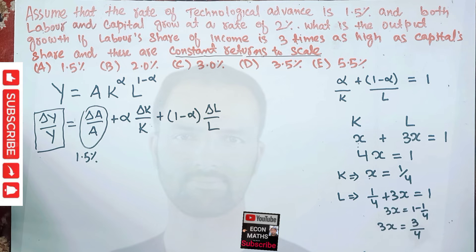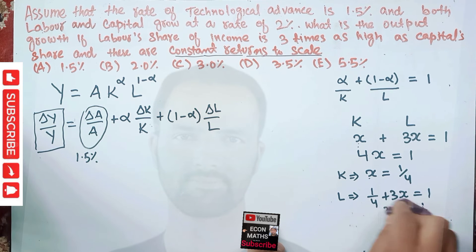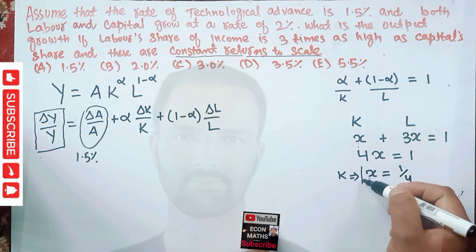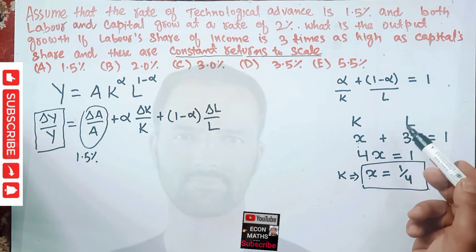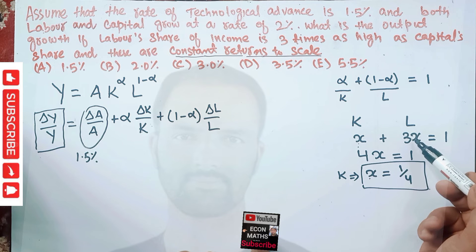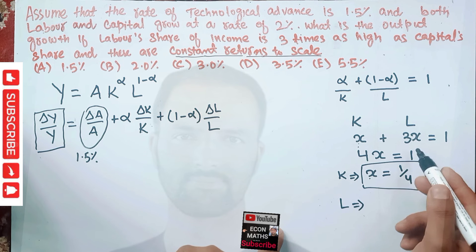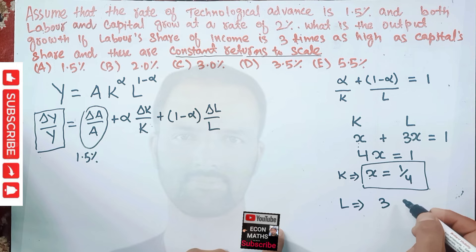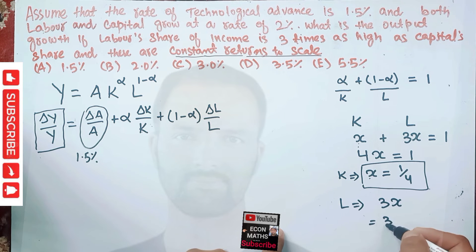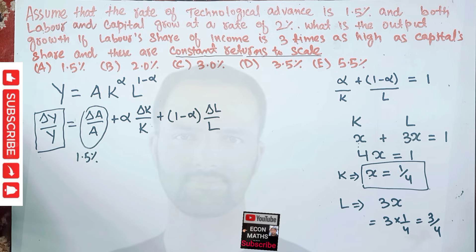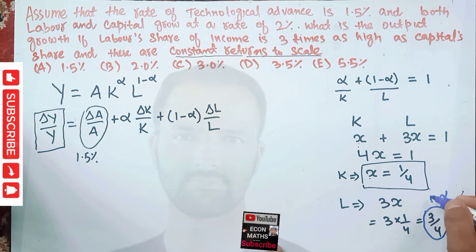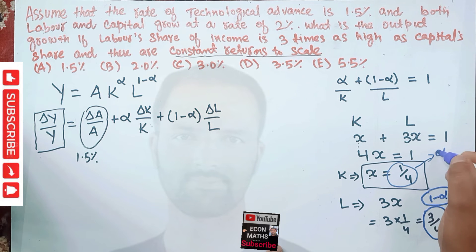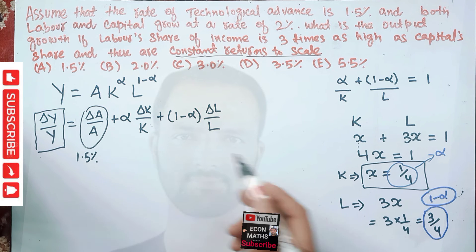So our capital share is alpha = 1/4, and our labor share (1 minus alpha) = 3/4. Now we just need to plug these values into the growth equation. Alpha is one upon four — this is the capital share — and (1 minus alpha) is three upon four, which is the labor share.